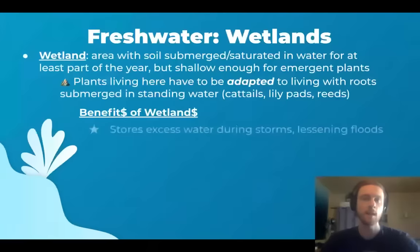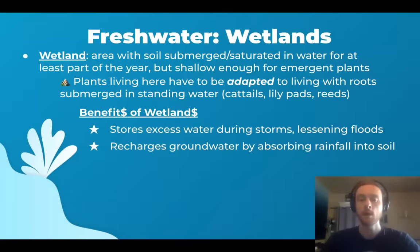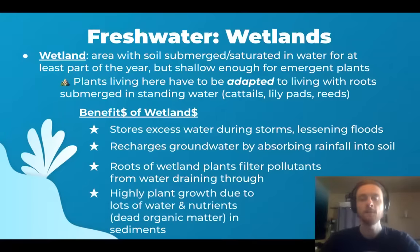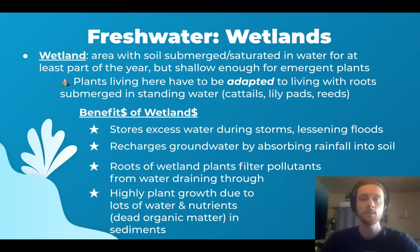Wetlands are very important because they have a whole host of benefits. They store excess water during storms, which reduces flooding damage. Wetlands also recharge groundwater by absorbing rainfall into the soil, refilling aquifers and other underground water sources that humans rely on. They provide natural filtration — the roots of the plants trap pollutants from stormwater runoff, preventing those pollutants from reaching the groundwater beneath. Finally, they're a great habitat for diverse plant life due to abundant water and nutrient-rich organic sediments, making them a really diverse and productive biome.